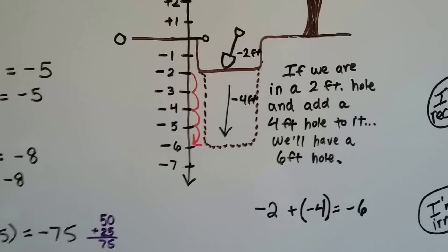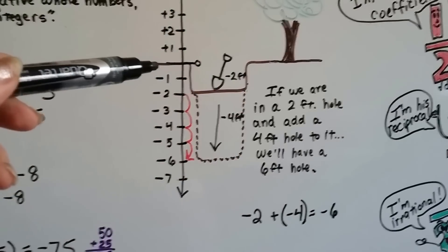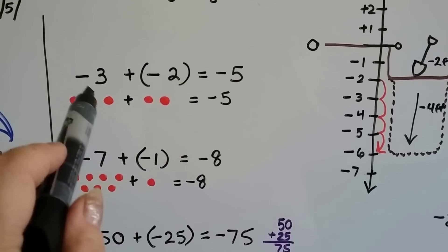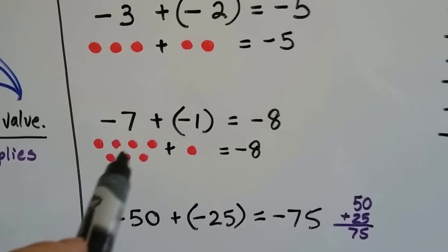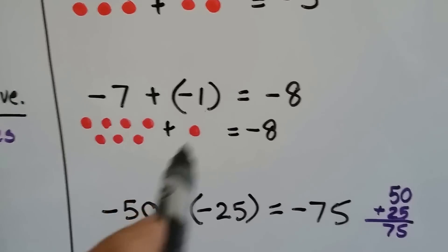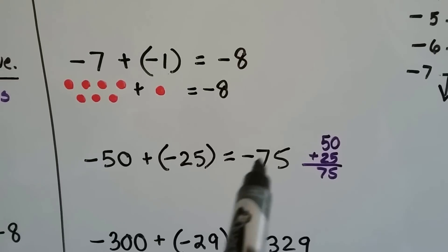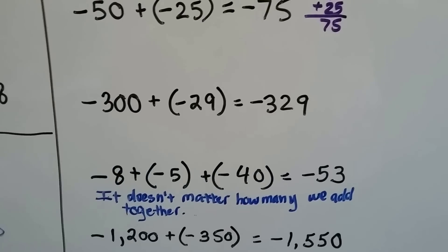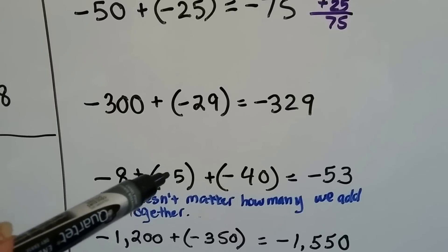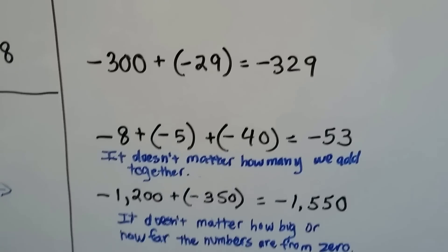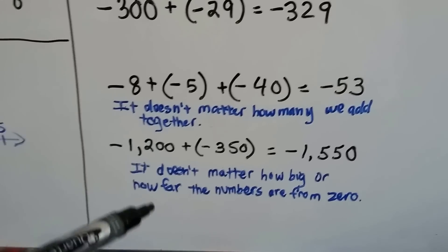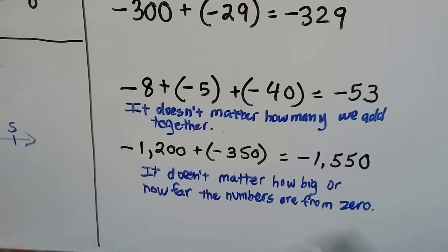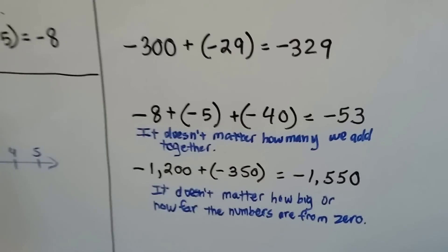You can even think of it as a water level and you're diving below. Negative three plus negative two is negative five — five red chips. Negative seven plus negative one is negative eight — eight red chips. Even bigger numbers: negative 50 plus negative 25 makes negative 75, or negative 300 plus negative 29 equals negative 329. And with three or more addends: negative eight plus negative five plus negative 40 makes negative 53. Negative 1200 plus negative 350 is negative 1550. The rules always apply, no matter how many numbers or how large they are.